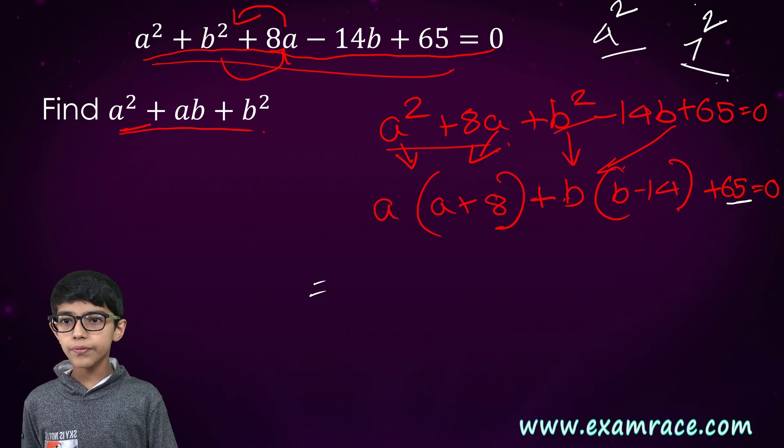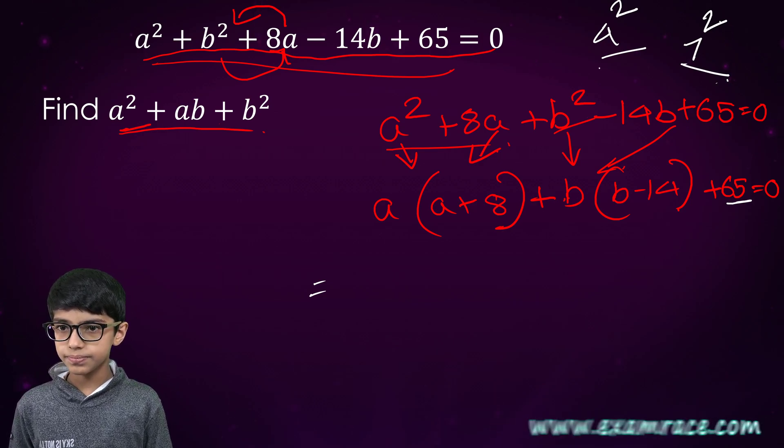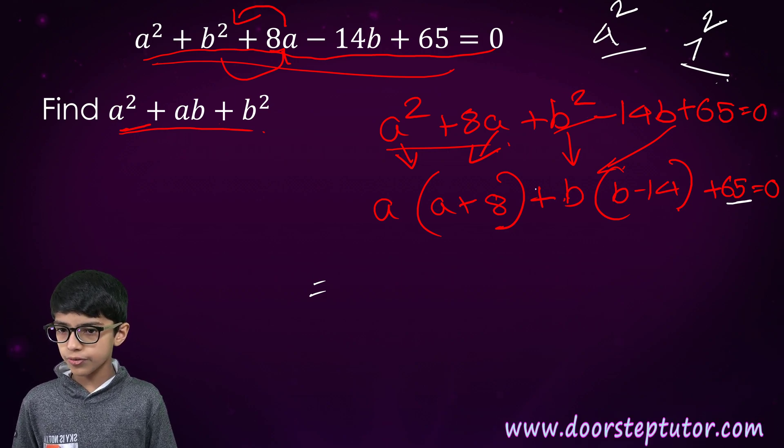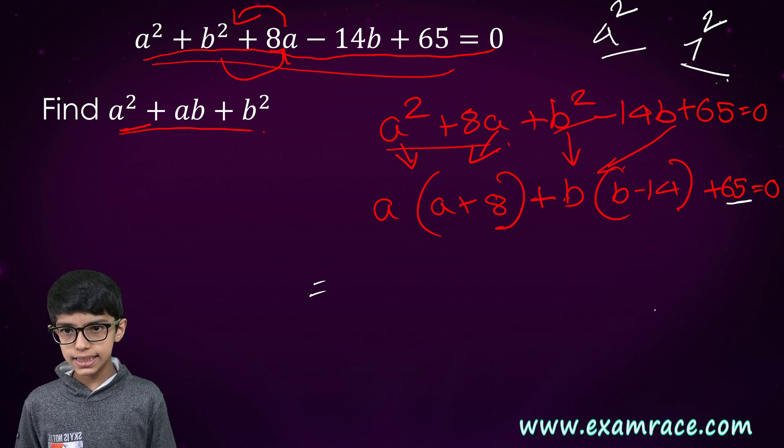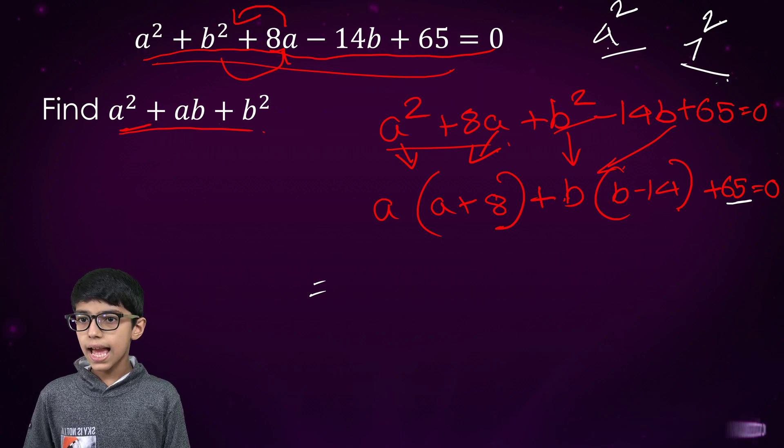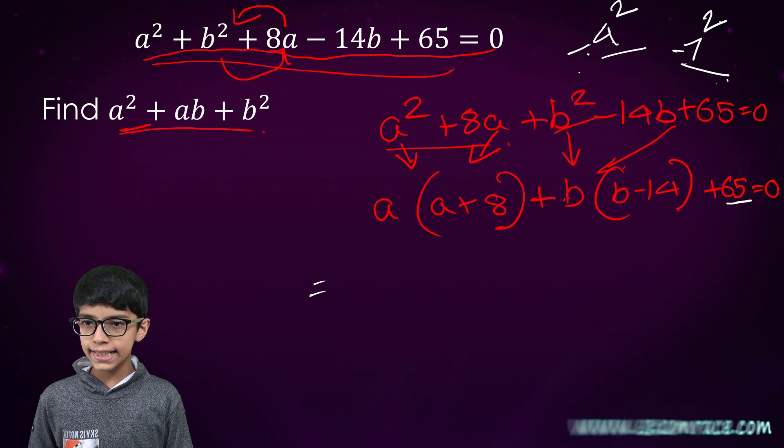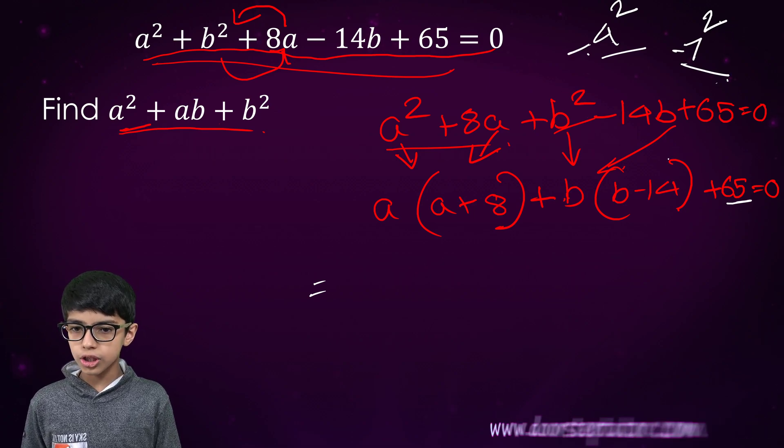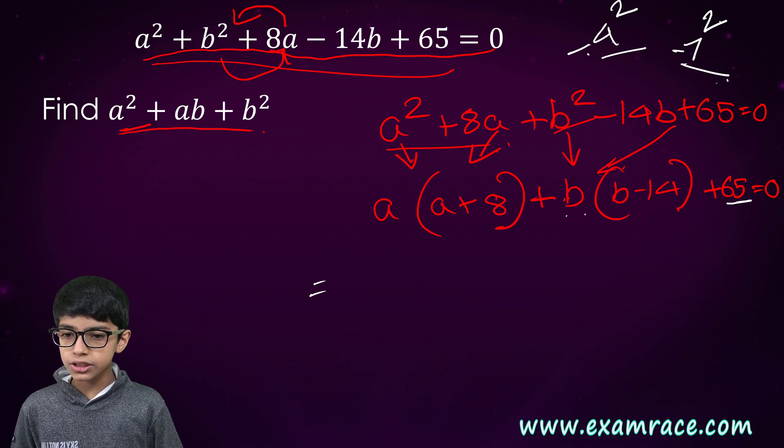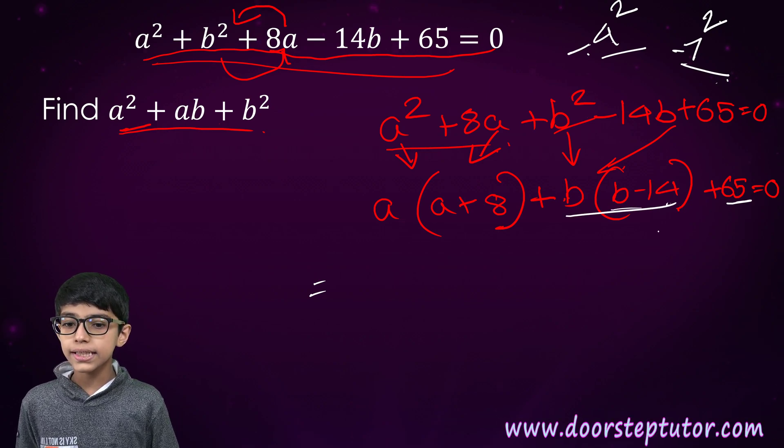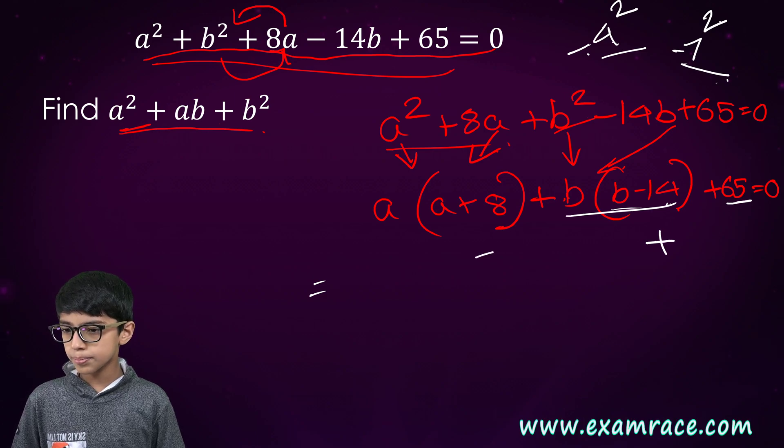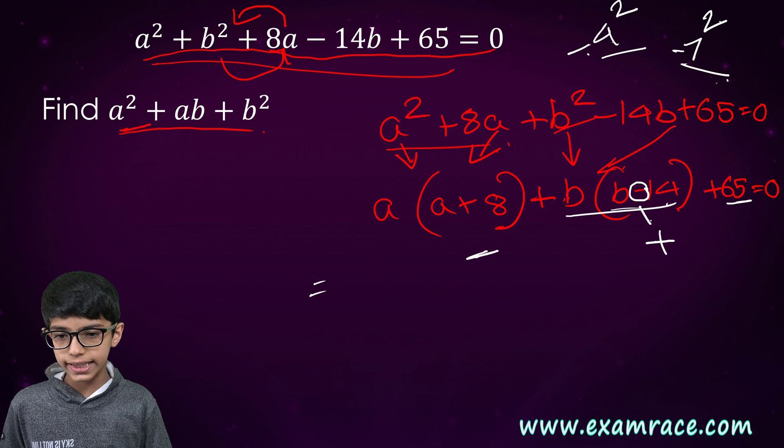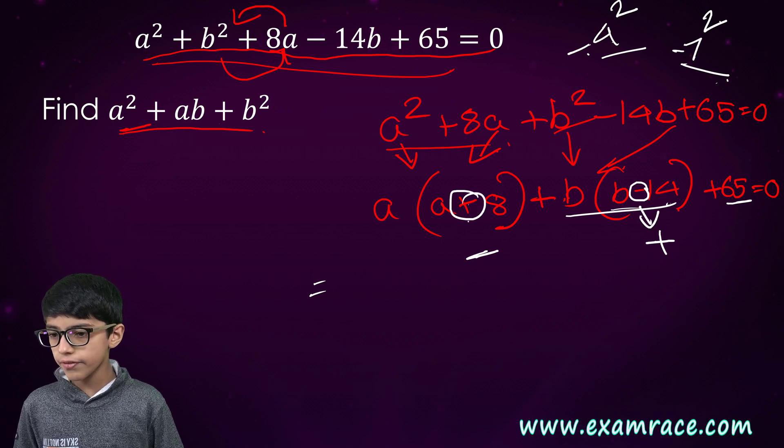So, we will try each of these. We will try with 4 and then with 7 and then with different signs. Or we can also do it one way. This would obviously be positive and this would be negative. Why? Because here we have negative and here we have positive.